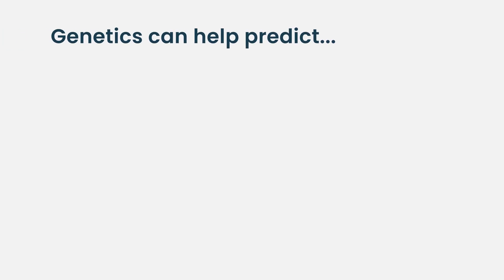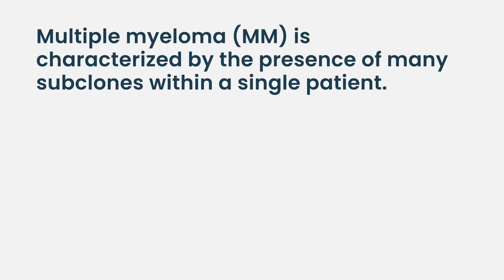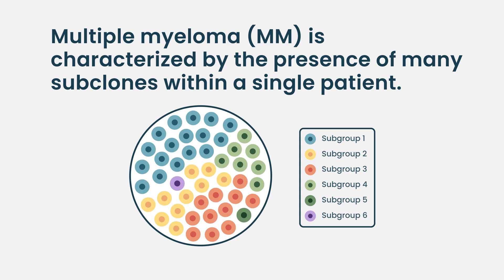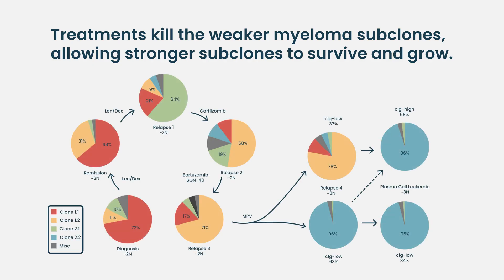Understanding the genetic background of every tumor will give us better information about how to treat it. We know genetics influences both progression and response to therapy. What makes myeloma even harder to treat is that even within one individual's tumor, individual cells can have different genetic events — meaning clonal evolution can occur. Therapy may treat most of the tumor, but smaller populations with different genetic events may resist therapy and require a better therapeutic approach.